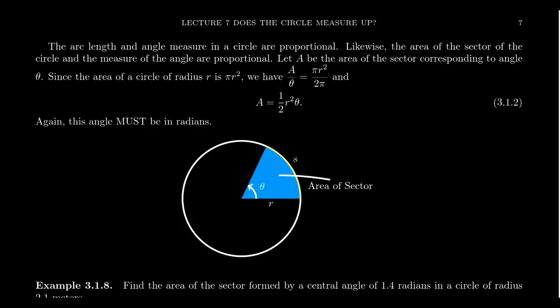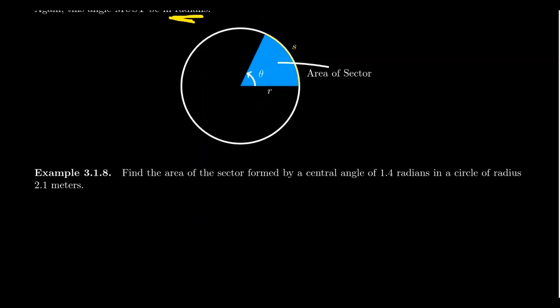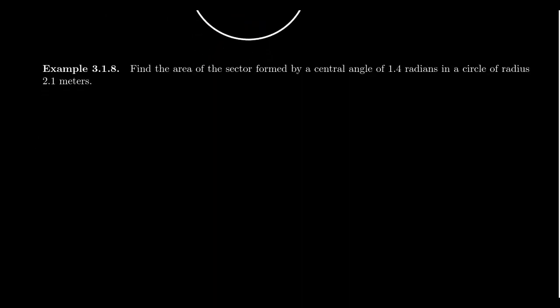Now simplifying this thing, we can divide out the pi. So you get A over theta is equal to r squared over 2. And if you times both sides by theta, we end up with the following formula: the area of the sector of a circle will equal 1 half r squared, where r is the radius, times theta, where theta is the radian measure of the central angle that produces this sector.